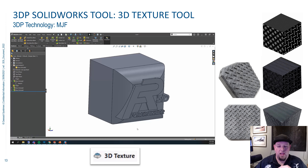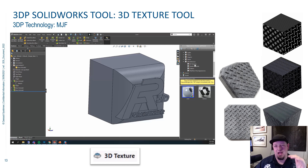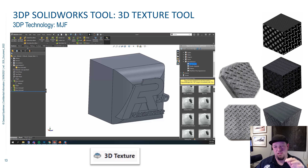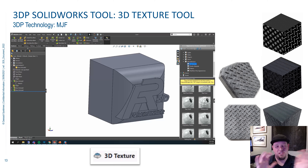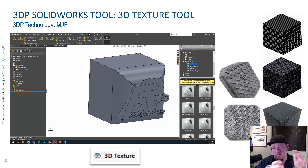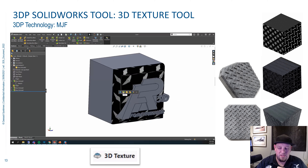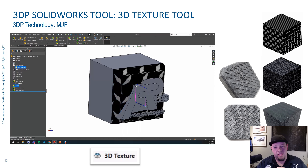You do have to run these parts on something like an MJF machine, a DLP machine, or polyjet — something like that — because you need really high resolution. An FDM machine or most SLAs wouldn't be able to make the texture actually pop off the part; it just wouldn't turn out. So you are limited on what you can run it on, but I highly recommend playing with it because it can add a really cool effect to your 3D printed part that you just can't get any other way.